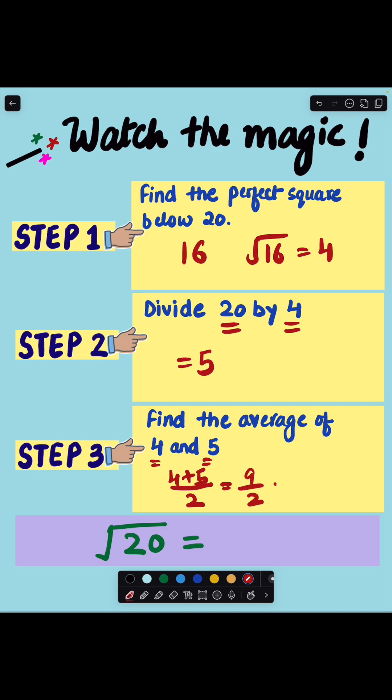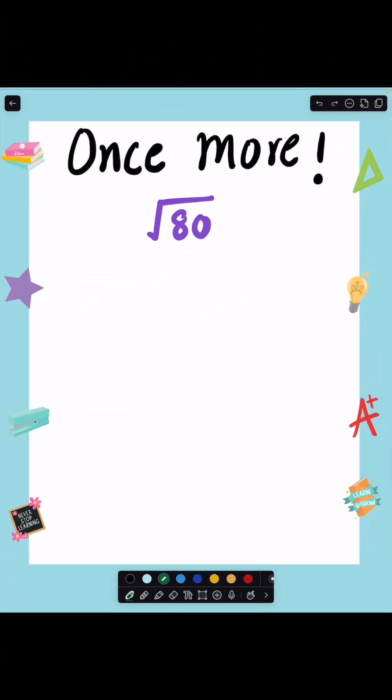So let's get the average: 4 plus 5 divided by 2 equals 9 upon 2, which is 4.5. That's the answer, so the square root of 20 is 4.5.